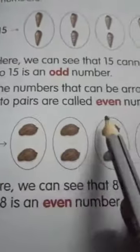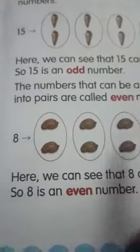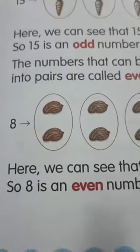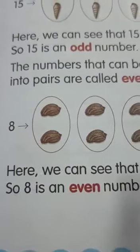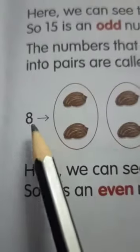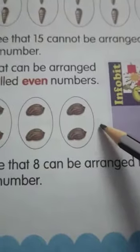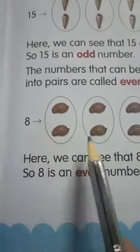Next, even numbers. Even numbers can be arranged into pairs. We are drawing 8 shells and making pairs, but no shell is left. That means 8 is an even number.